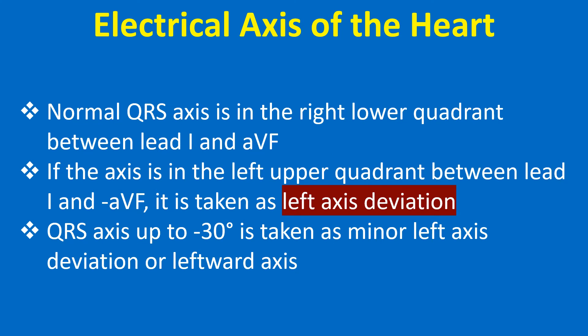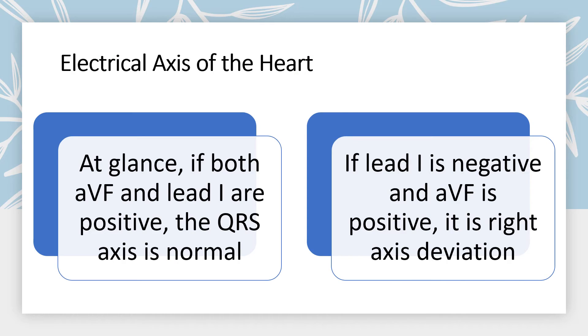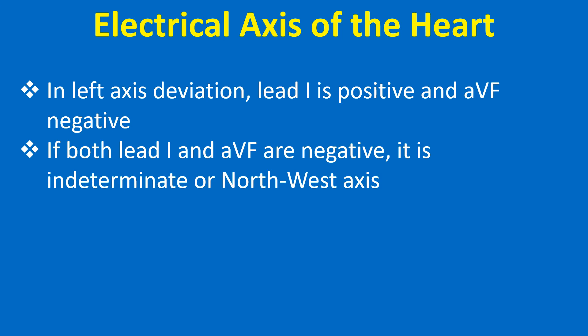Normal QRS axis is in the right lower quadrant between lead 1 and AVF. If the axis is in the left upper quadrant between lead 1 and AVF, it is left axis deviation. QRS axis up to minus 30 degrees is taken as minor left axis deviation or leftward axis. QRS axis in the right lower quadrant between AVF and lead 1 is right axis deviation. Axis in the right upper quadrant is indeterminate axis, sometimes called north-west axis, which could occur in both extreme right and extreme left axis deviation. At a glance: if both AVF and lead 1 are positive, the QRS axis is normal; if lead 1 is negative and AVF is positive, it is right axis deviation; in left axis deviation, lead 1 is positive and AVF is negative; and if both lead 1 and AVF are negative, it is indeterminate or north-west axis.